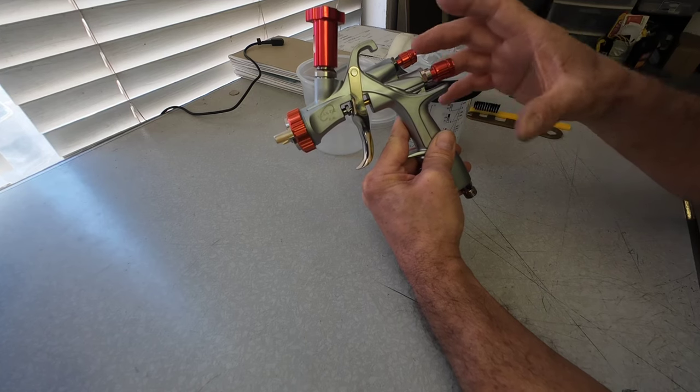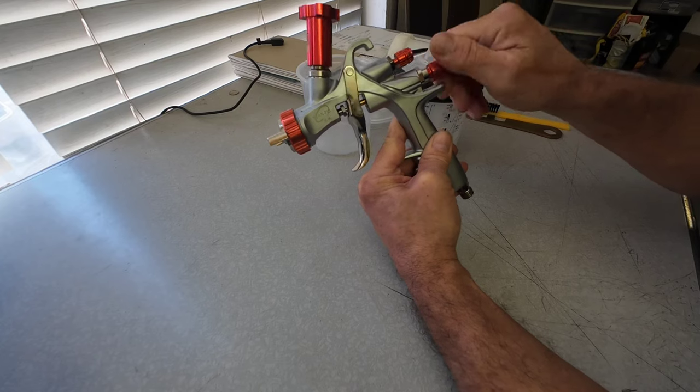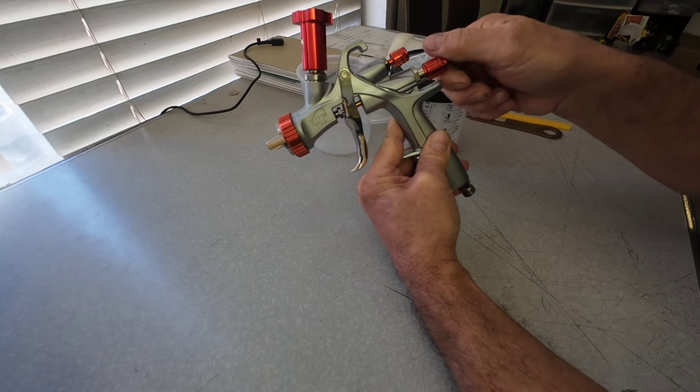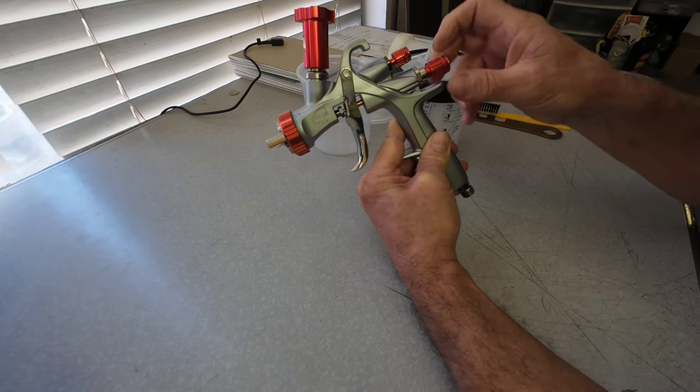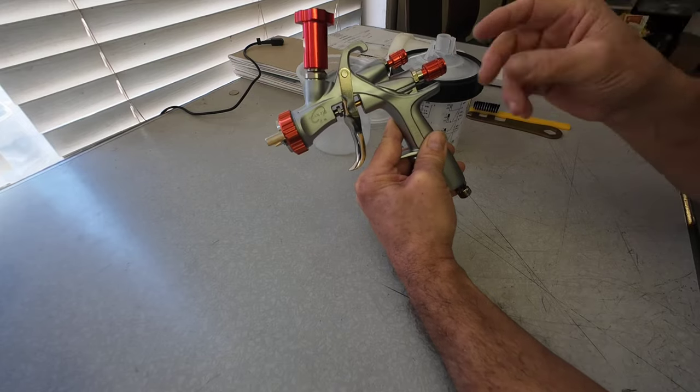So how I set my gun up for base and clear coat is I'll open my fan pattern all the way up. I'll turn my fluid volume all the way in, and then I'll open it three turns out from close. So I'll do one full turn, two full turns, three full turns. And that is usually pretty good for clear or base coat.